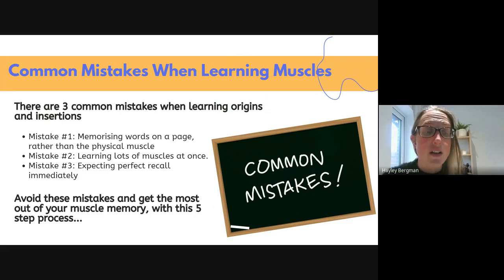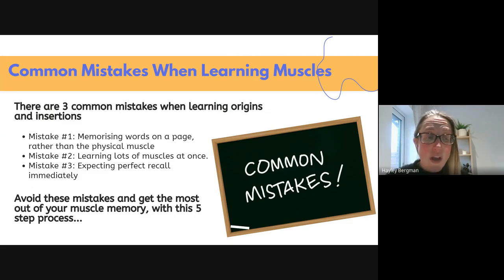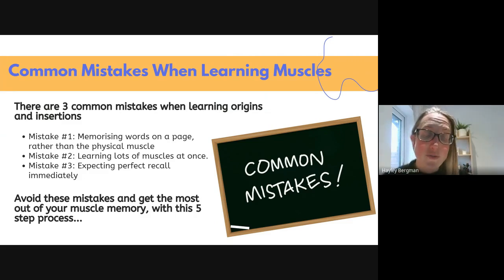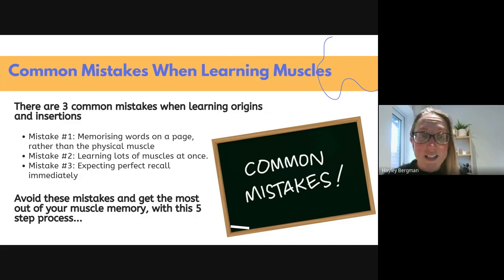Mistake number two is learning lots of muscles all at once. That could be 37 muscles for level 2 anatomy and physiology, 50 for level 3, or if you're doing nursing or a doctorate, hundreds to learn. You cannot learn them all at once. If you try to, all those different origins and insertions are going to get mixed up in your brain and you'll end up not really understanding where they are or what they do, making recall much harder.